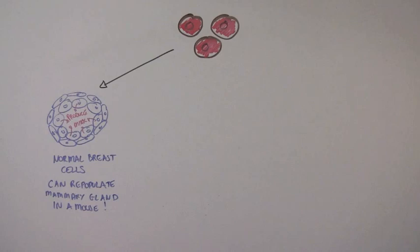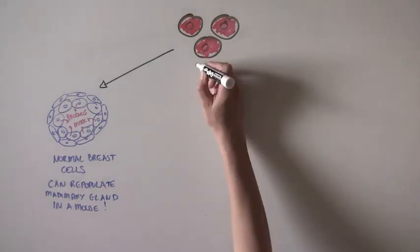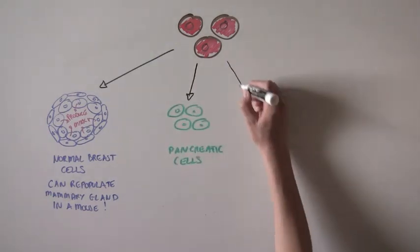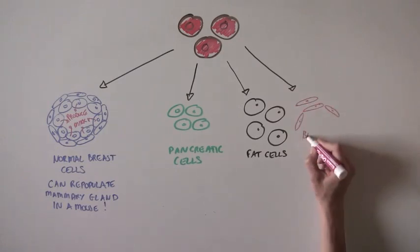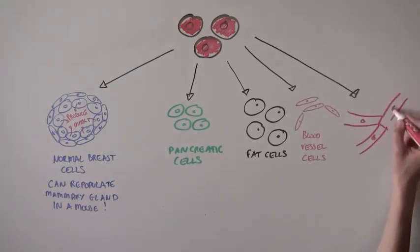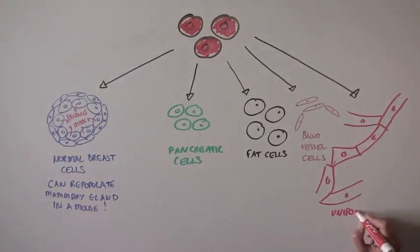Well, it turns out that they can. The scientists were able to make cells of the pancreas, lipid-filled fat cells, cells that line blood vessels, and even uniformly beating heart cells in a petri dish.